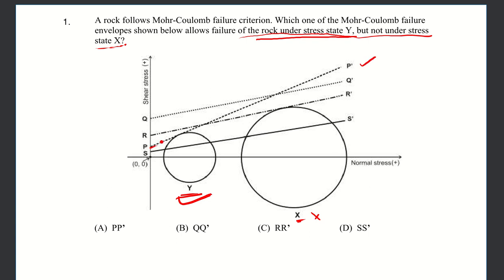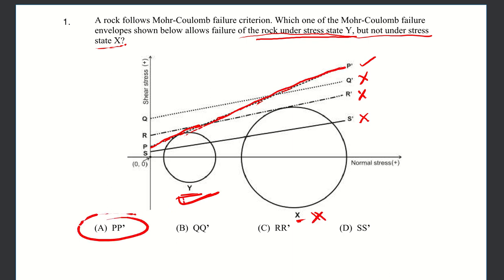The first one over here — you'll see it's tangent to Y, but it's not tangent to X. If you look at the other ones, this one is not tangent to any of them. This one is tangent to X but not tangent to Y — that's not what you're looking for. And again, this one is not tangent to any of them. So we can see how this is the failure criteria for Y but not X. Therefore, our solution is A.